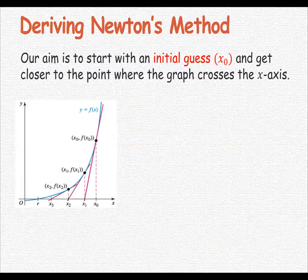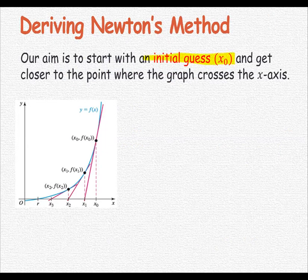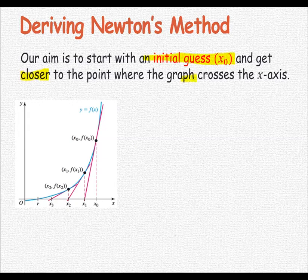Deriving Newton's method: Our aim is to start with an initial guess x₀ and get closer to the point where the graph crosses the x-axis, which is called the x-intercept or the root, which is our goal.